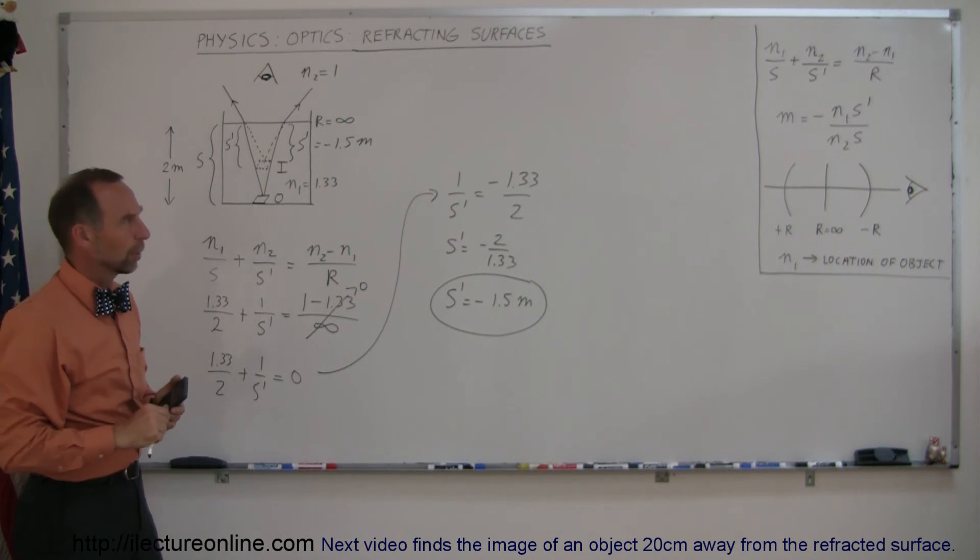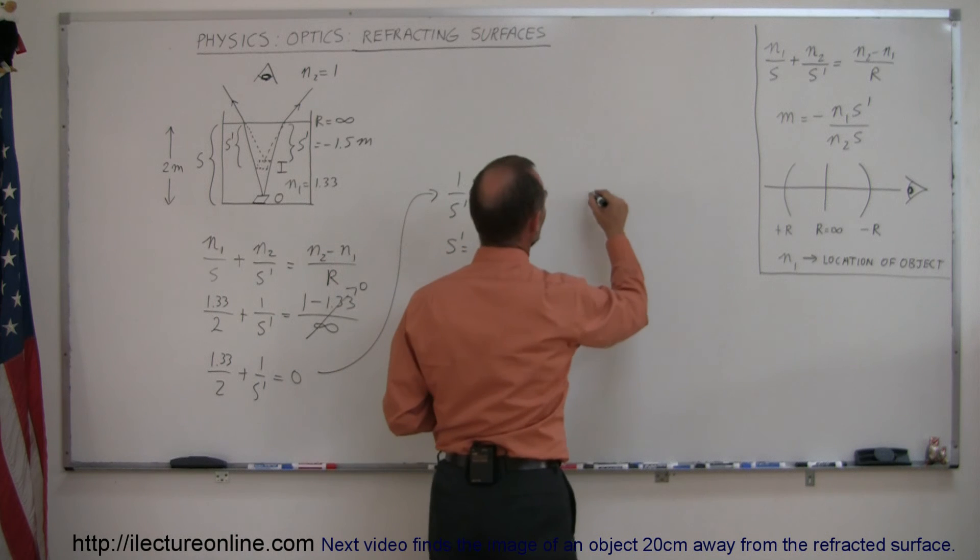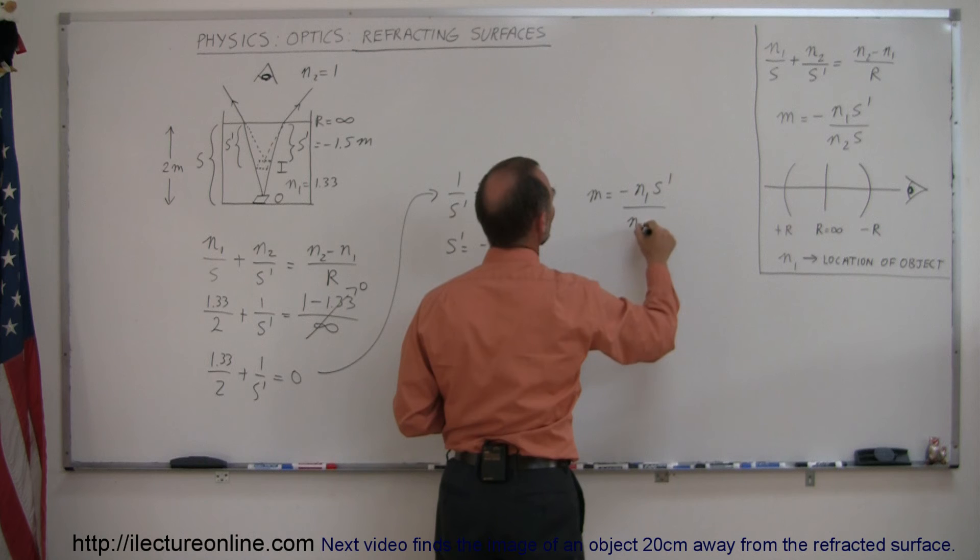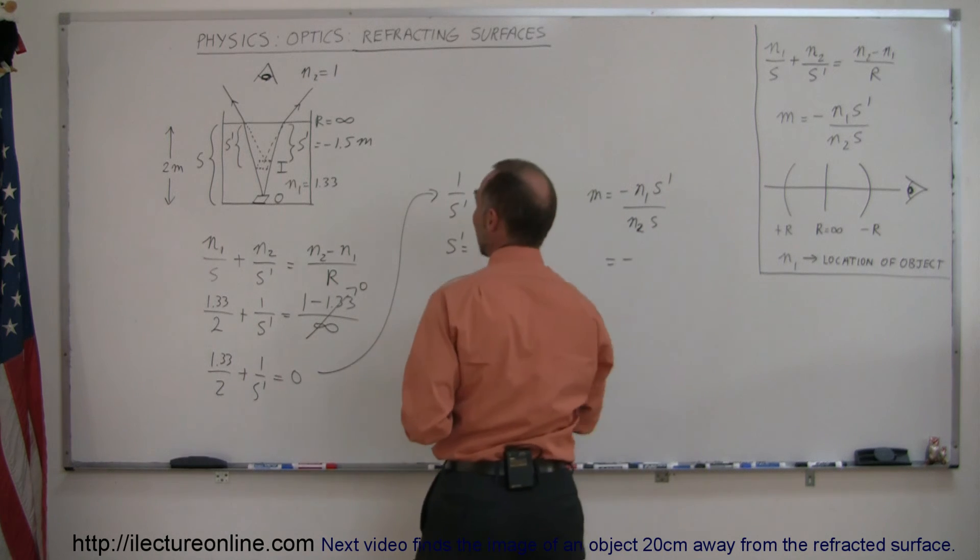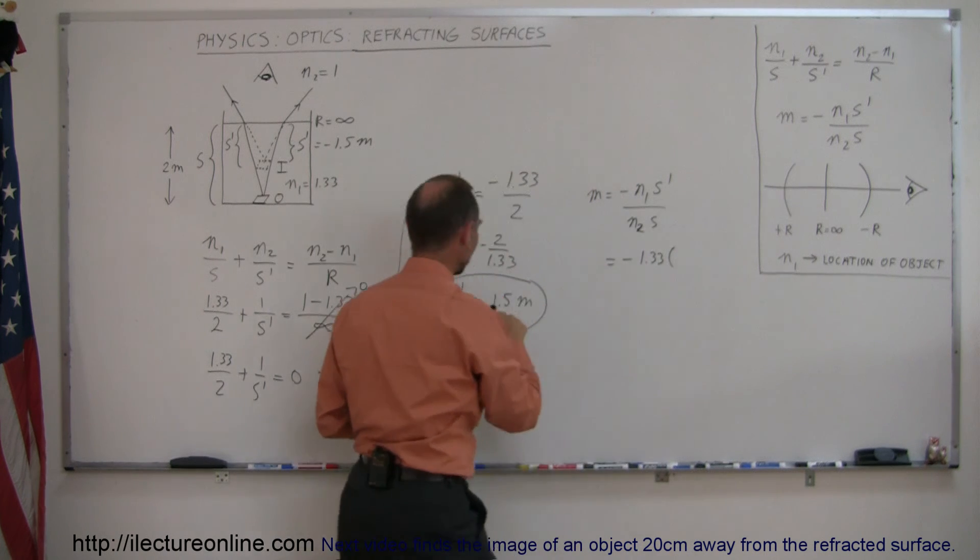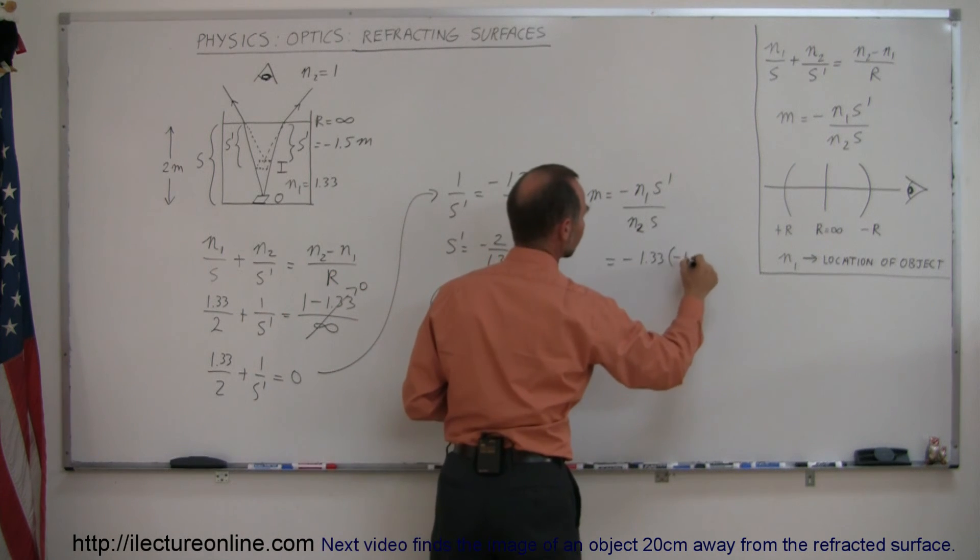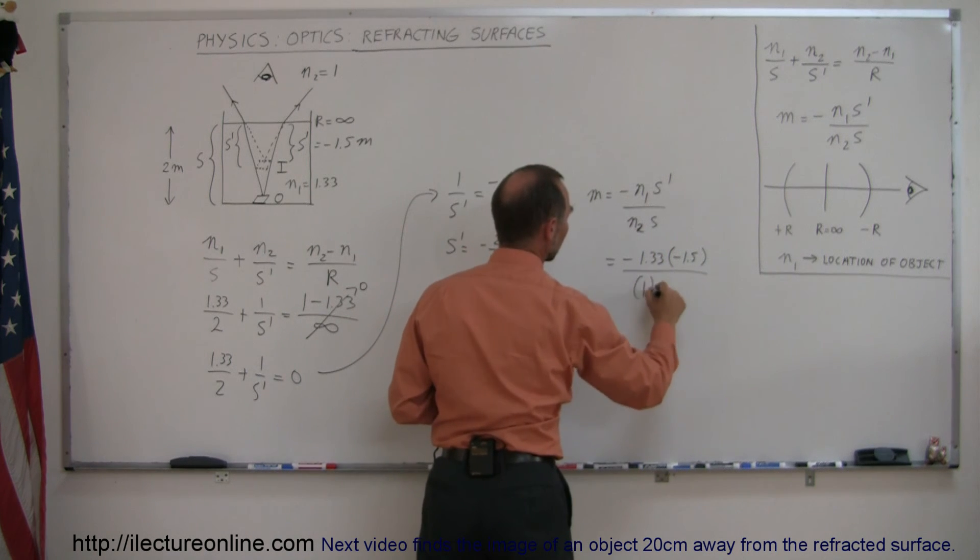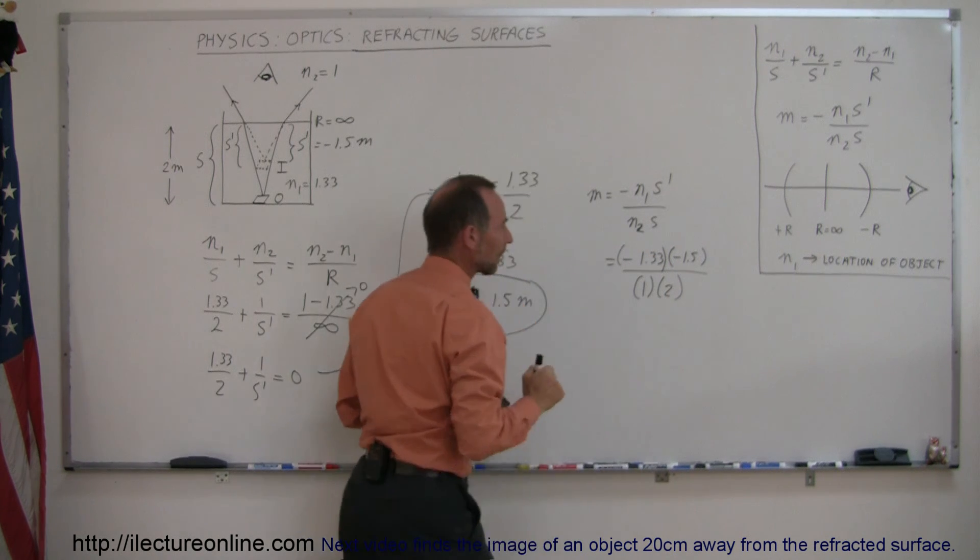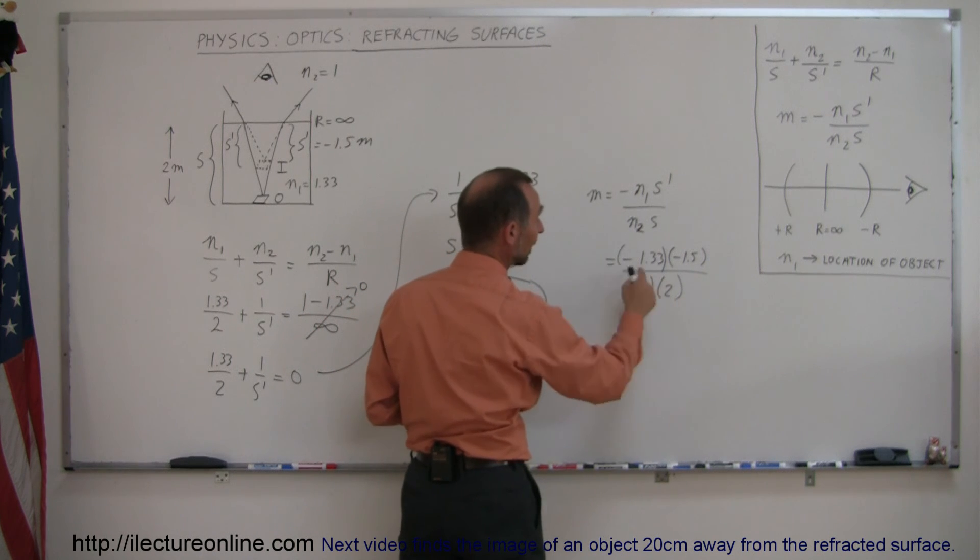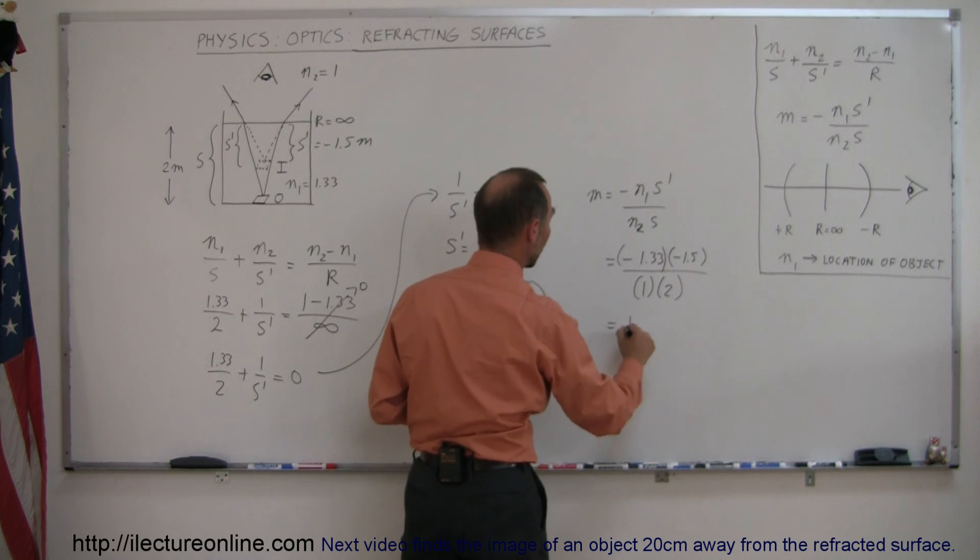What about the magnification? The magnification equals minus N1 S prime over N2 times S. So minus N1, which was 1.33, times S prime, which was minus 1.5, divided by N2, which was 1, times S, which was 2 meters. 1.33 times 1.5 is 2, 2 divided by 2 is 1, and minus times minus is plus, so this equals 1.